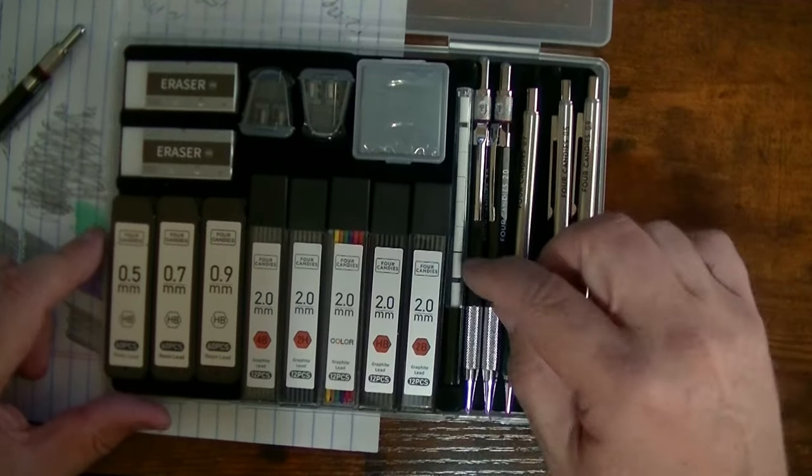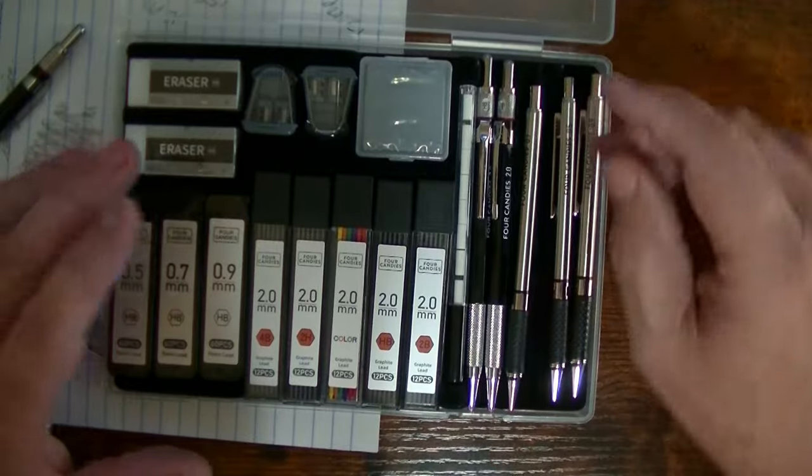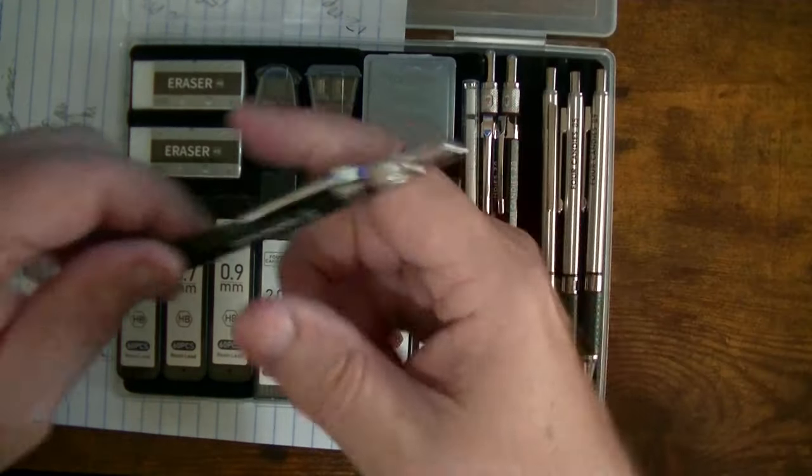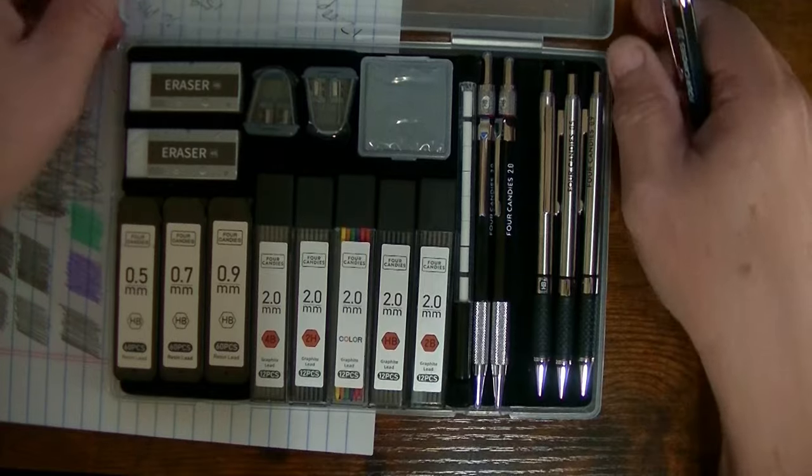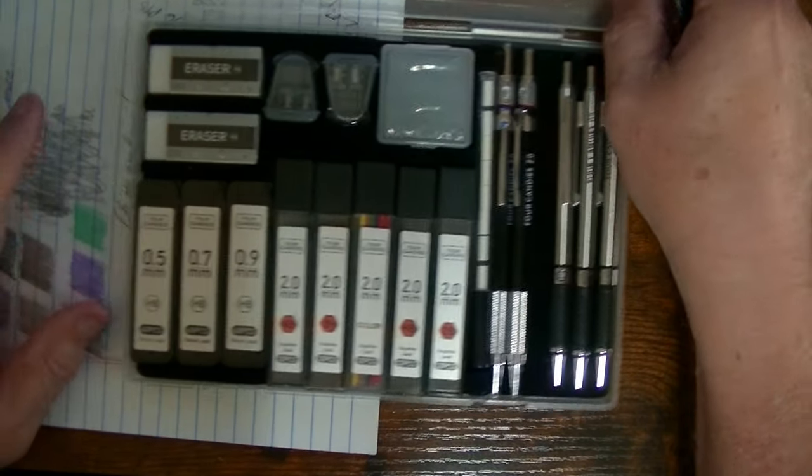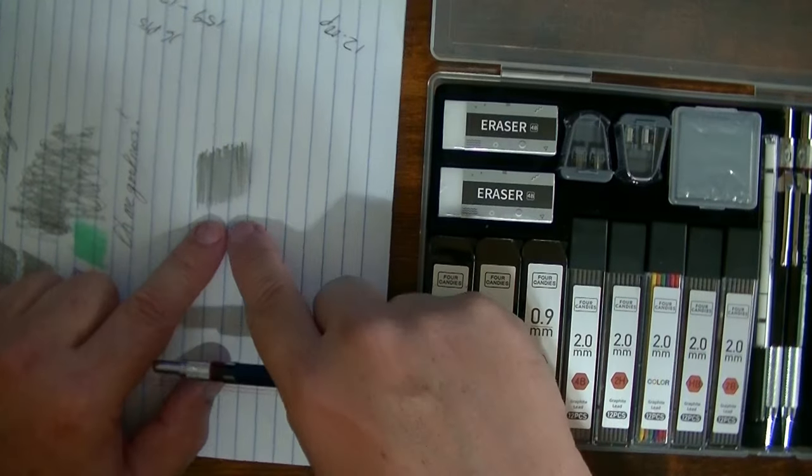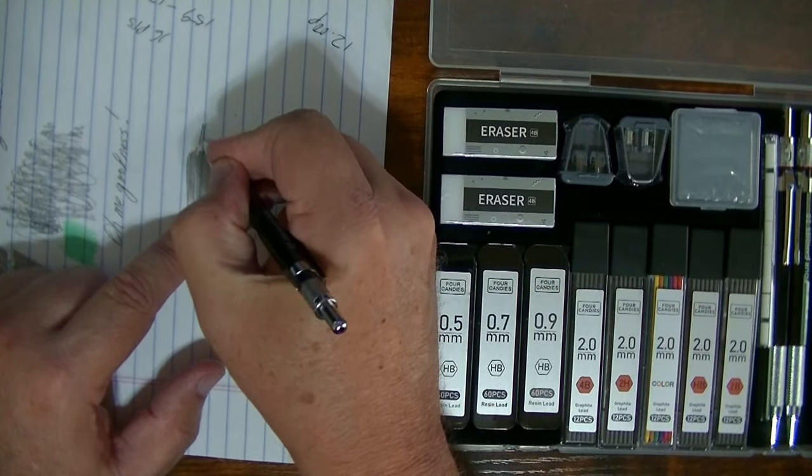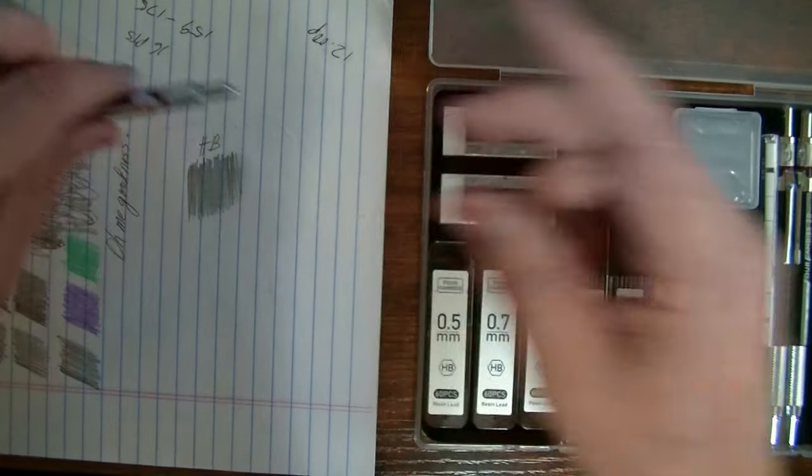Now going back to the 2.0s, because the 2.0s, I think, is where all the action's at. And I've got one right here. We're going to do some things with these different leads. First thing I'm going to do here is, you've already seen me draw this HB, so I'm just going to go ahead and mark this HB. And I'm going to leave this as an HB. Now I'm going to take this next one. I'm going to set this to 2B.